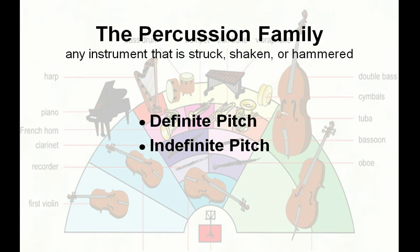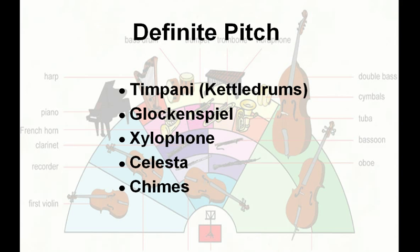The percussion family is any instrument that is struck, shaken, or hammered, and it has a definite pitch or an indefinite pitch. Definite pitch instruments include the timpani or kettle drums, the glockenspiel, the xylophone, the celesta, or chimes.